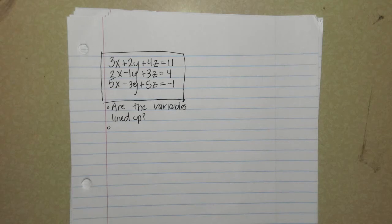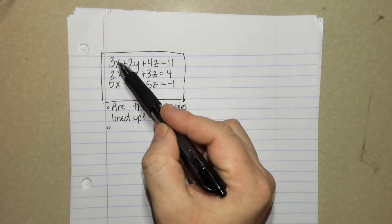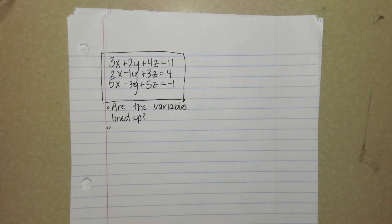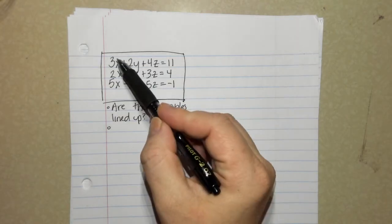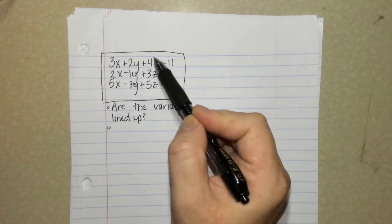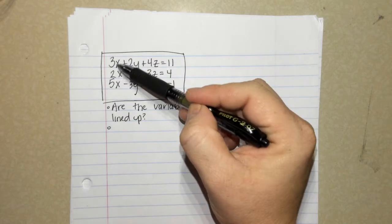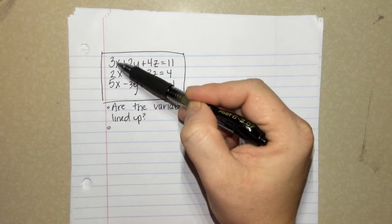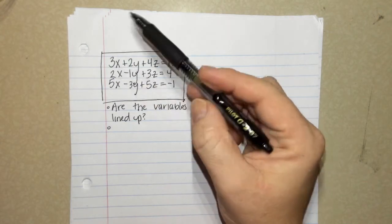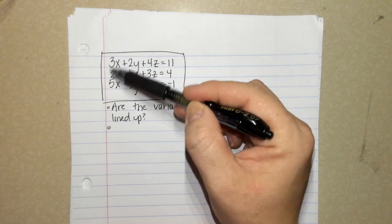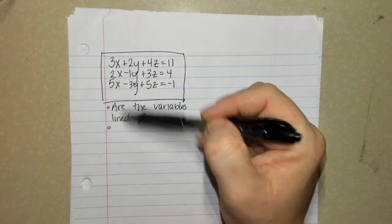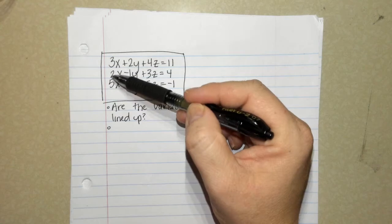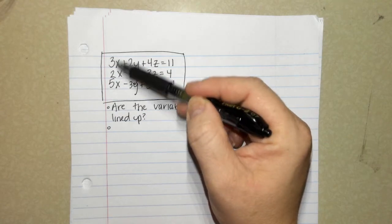The second thing is, there's no wrong answer, but there will be an answer that makes your life easier. So I want you right now to examine the x's, examine the y's, and examine the z's. When you look at the x's, are there any two that when you combine them, they would just cancel out? Like, if you combine three and two, they don't cancel. Three and five doesn't cancel. Two and five doesn't cancel. So x would not be ideal to try to eliminate.